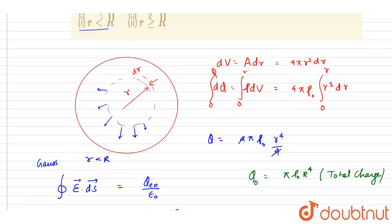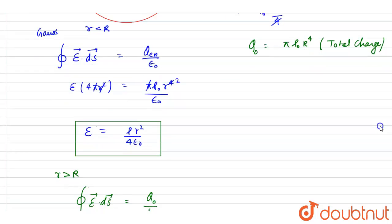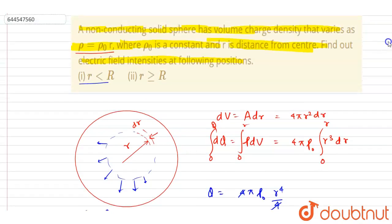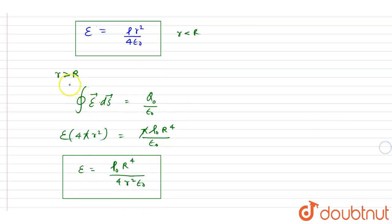In summary, for r less than R the electric field is E equals pi rho naught r squared divided by 4 epsilon naught, and for r greater than or equal to R the electric field is E equals rho naught R to the power 4 divided by 4 epsilon naught r squared.